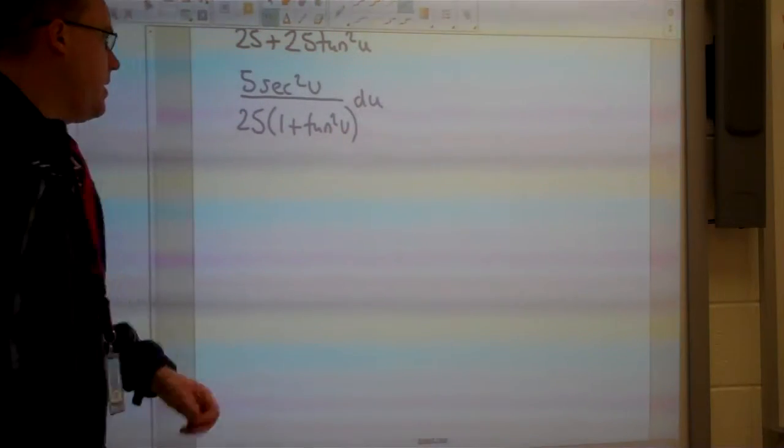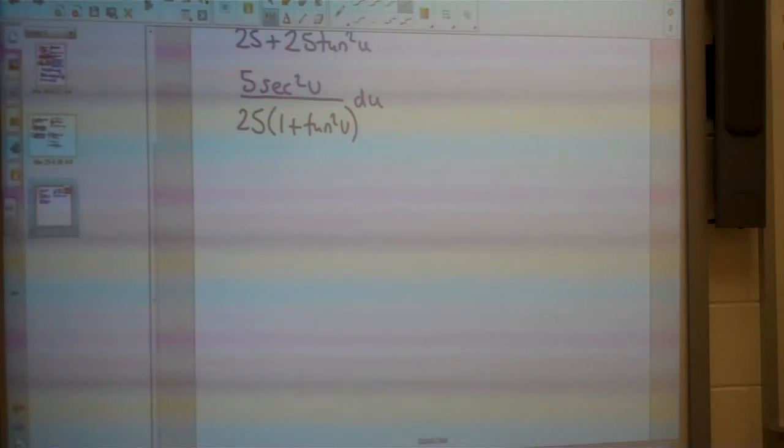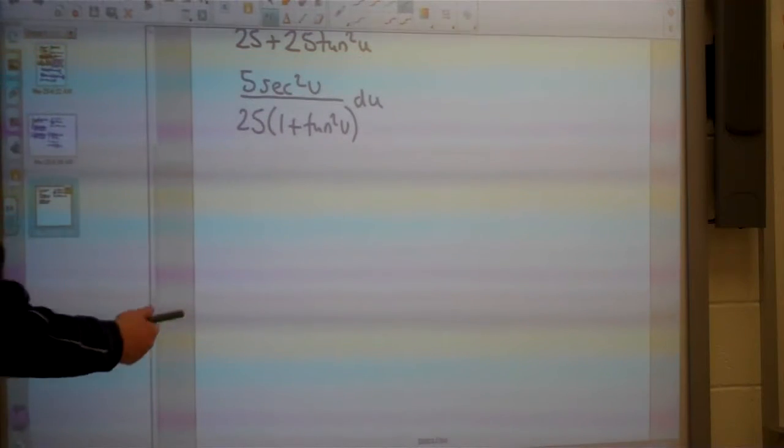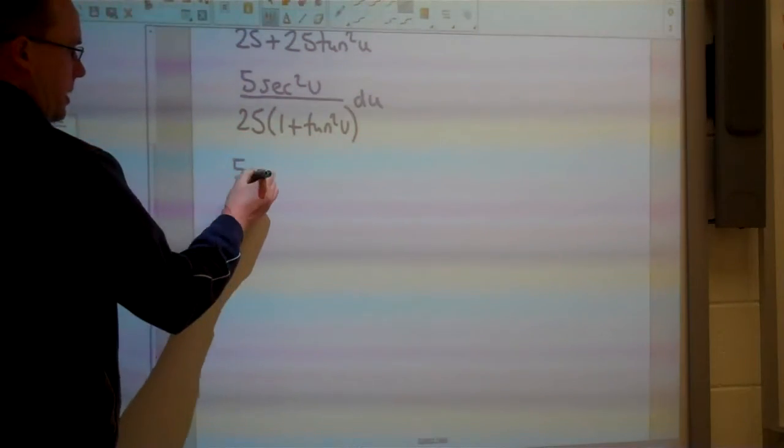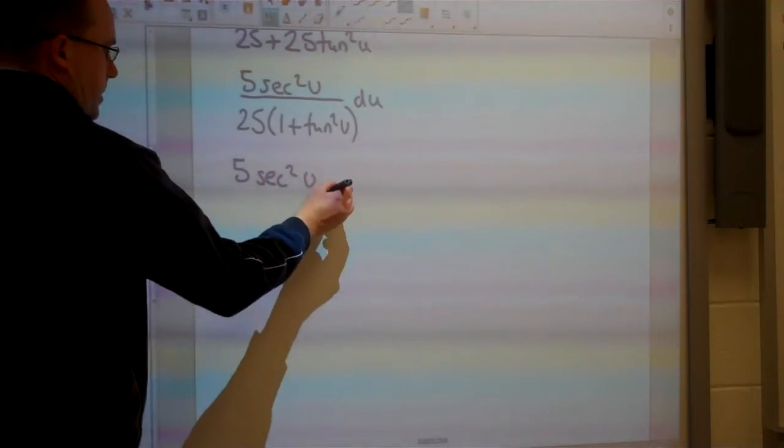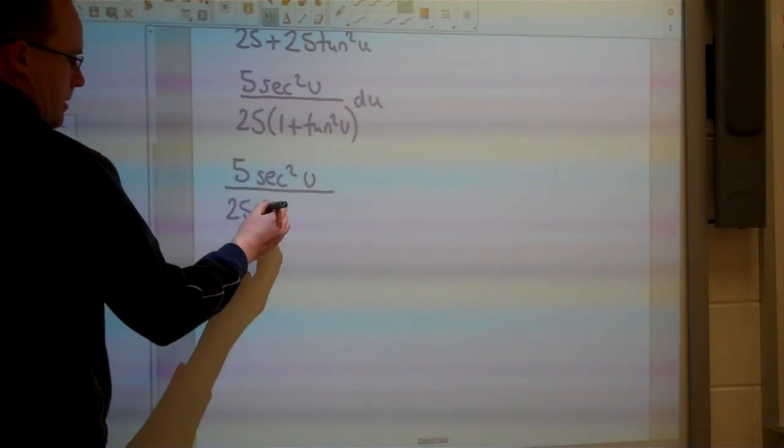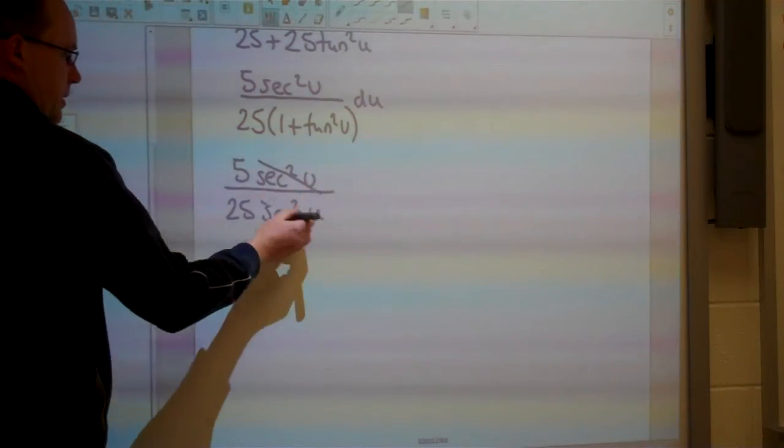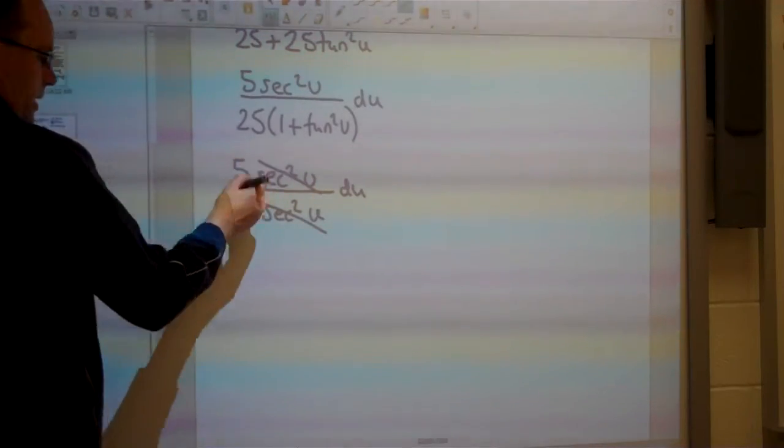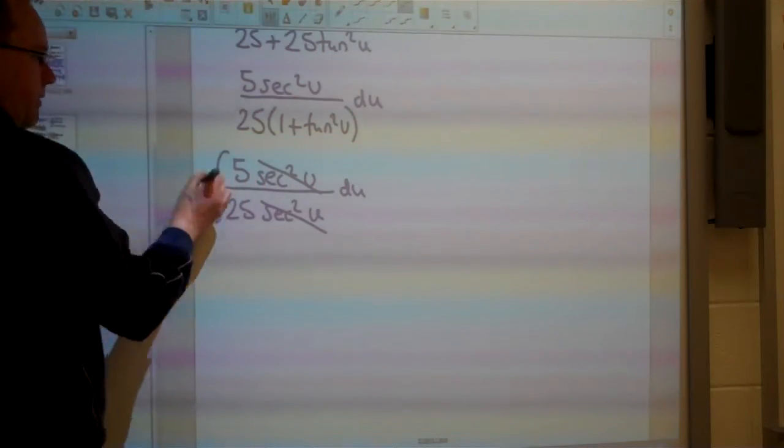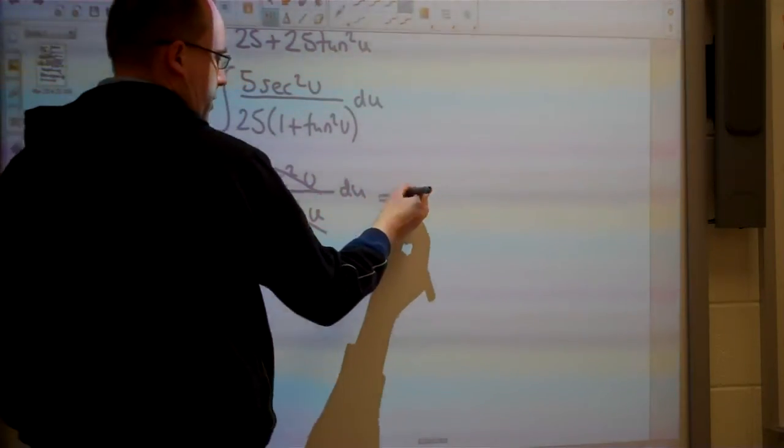So I'm at this point here, and then I've got to look to see if there's another identity I can use, and you should recognize 1 plus tan squared as secant squared. So this is going to cancel, and what I get left with is 5 over 25, which is just simply 1 fifth.